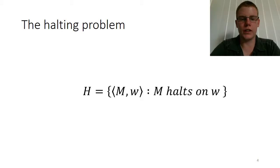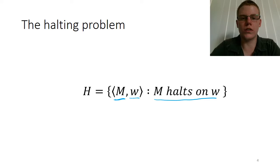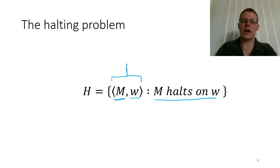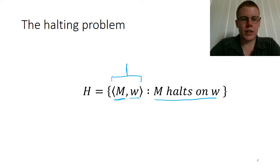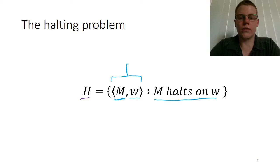So after that explanation, we can now talk about what the halting problem is. The halting problem is the set of strings representing the encoding of a machine and its input, such that the machine halts on that input. The universe consists of syntactically valid encodings of Turing machines and their inputs. Being able to decide this problem would be a very helpful tool — we could take any program and any input and say beforehand whether it will halt or loop forever, which would be an incredibly helpful debugging tool.